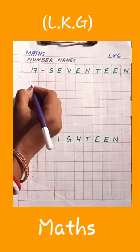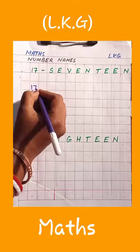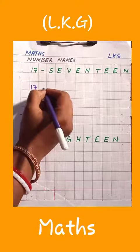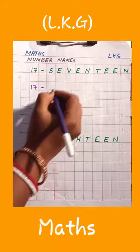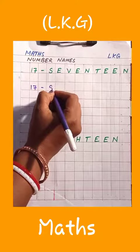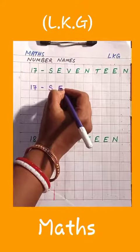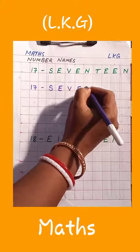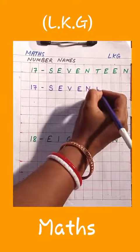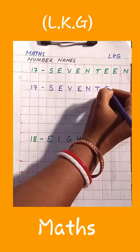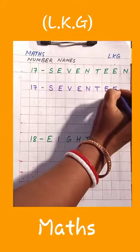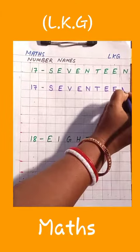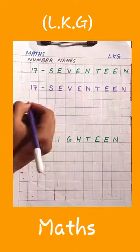Now let's write 17, dash, spelling: S E V E N T E E N. Seventeen.